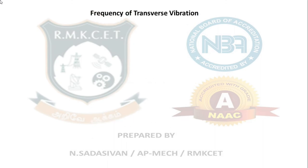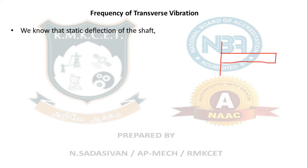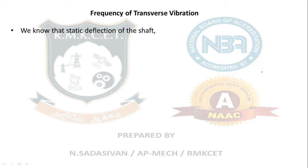Next is transverse vibration. For the same cantilever setting, now make it horizontal. The shaft has the 100 kg load, and now the deflection is downward — this is transverse deflection. This is similar to putting a steel scale on the bench and vibrating it. How many times it happens per second is the question. For free transverse vibration, the static deflection formula for a cantilever with load at the tip — weight of beam neglected — is δ = WL³ / 3EI.